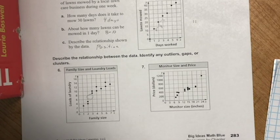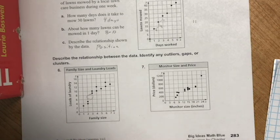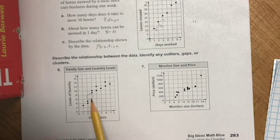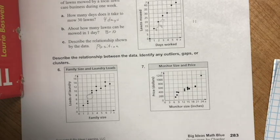For clusters: a few points are close together in places, but they're not really tightly grouped together — not truly clustered. So I'd say there's maybe a slight gap, but even that's hard to say with certainty.